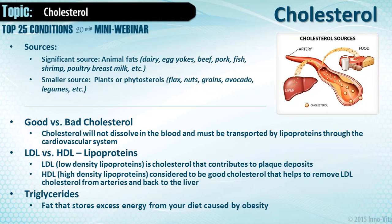Pork takes about eight hours to move through digestion for the body to process it appropriately. Fish is one of the best sources we have of cholesterol and essential fatty acids. Shrimp is a bottom feeder — quite a yucky little animal, but sure tastes good. Poultry and breast milk also serve as good sources of cholesterol. We need it, of course — we just need to watch how much we consume. The smaller sources would be plants: phytosterols like flax, nuts, grains, avocados, and legumes. Getting it from plant sources is more effective than animal sources.